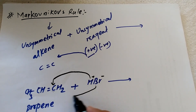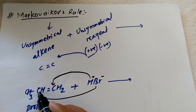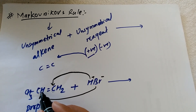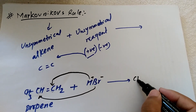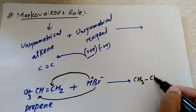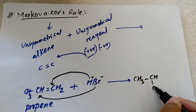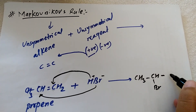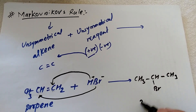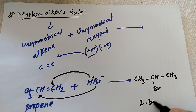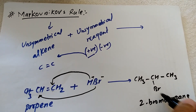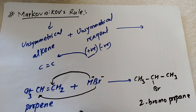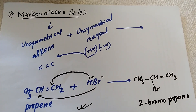The positive part of the reagent bonds with that double-bonded carbon atom which contains the lower number of hydrogens. So the product formed is CH3-CHBr-CH3, which is 2-bromopropane. This is the Markovnikov's rule.